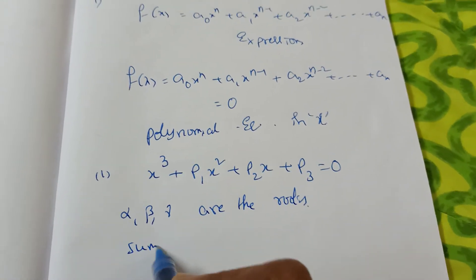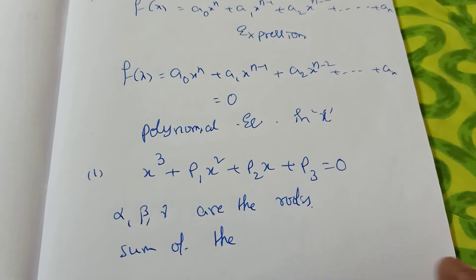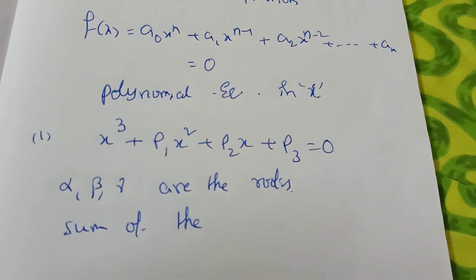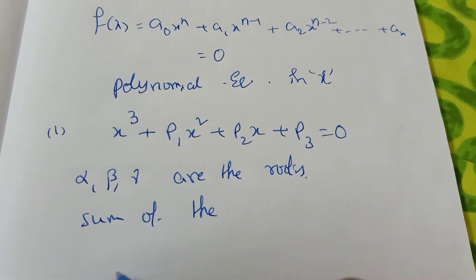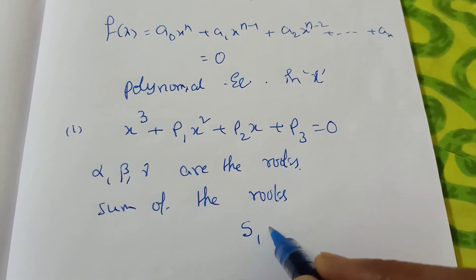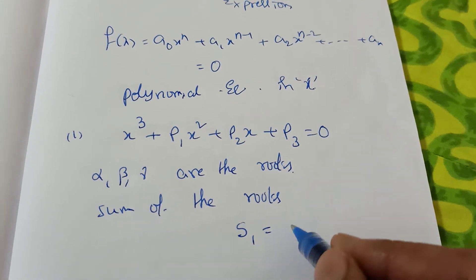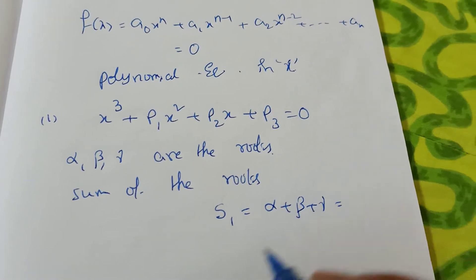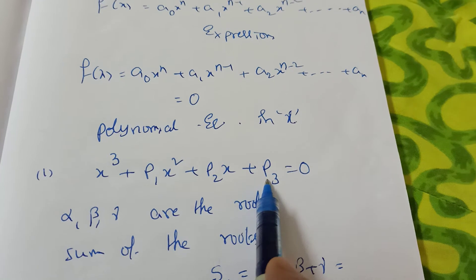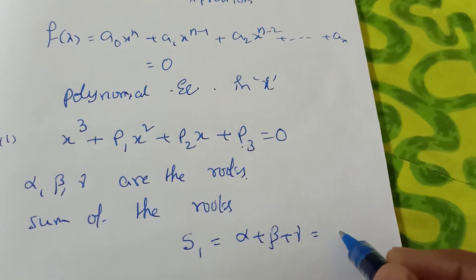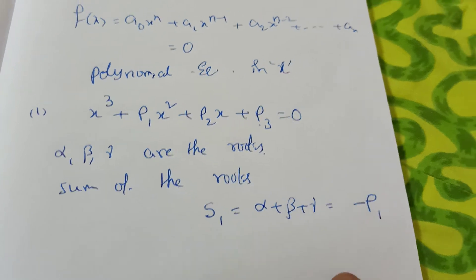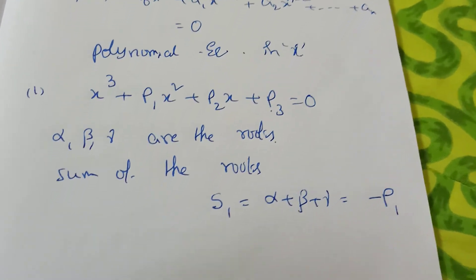Now, sum of the roots — remember the quadratic formula: sum of roots = −b/a. Similarly for the cubic equation, S1 = alpha + beta + gamma. Comparing with the general form, the formula is −p₁/1 = −p₁. Just like the quadratic formula, only here we compare the coefficients a, b, c, d.